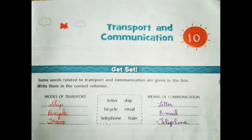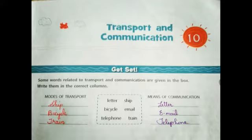Let's do the Get Set exercise given on page 67 in our textbook. Some words related to transport and communication are given in a box — letter, bicycle, telephone, ship, email, and train — and you have to write them in the correct columns: modes of transport and means of communication. Under modes of transport: ship, bicycle, train. Under means of communication: letter, email, telephone.